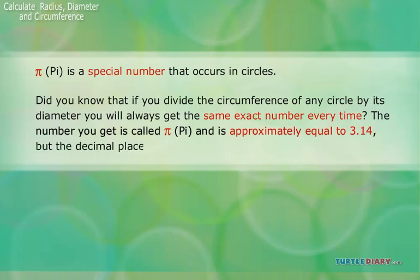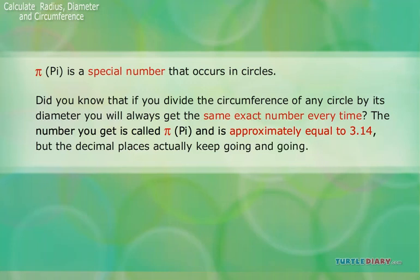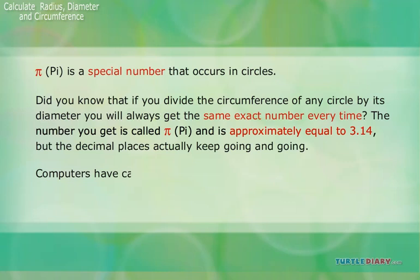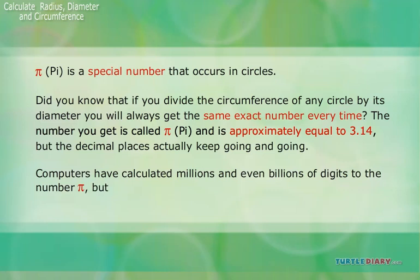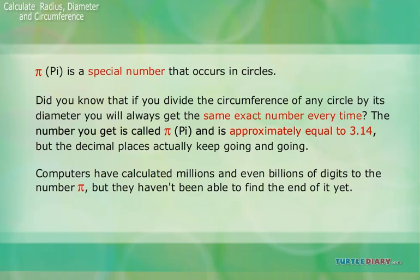But the decimal places actually keep going and going. Computers have calculated millions and even billions of digits to the number pi, but they haven't been able to find the end of it yet. When you use pi in a problem, typically you can just remember pi is approximately 3.14.